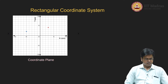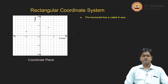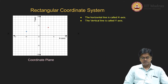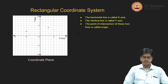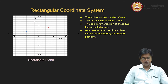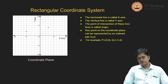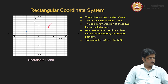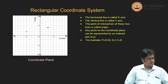Let us revise what we have studied. The horizontal line is called the x-axis — it allows you to move from left to right. The vertical line is called the y-axis, which allows movement up and down. Then there is the point of intersection of these two axes, which is called the origin. Any point on this particular plane can be denoted by an ordered pair (x, y). For example, given a point 3 comma 4: we travel three units in the horizontal direction and four units in the vertical direction. Therefore, 3 comma 4.